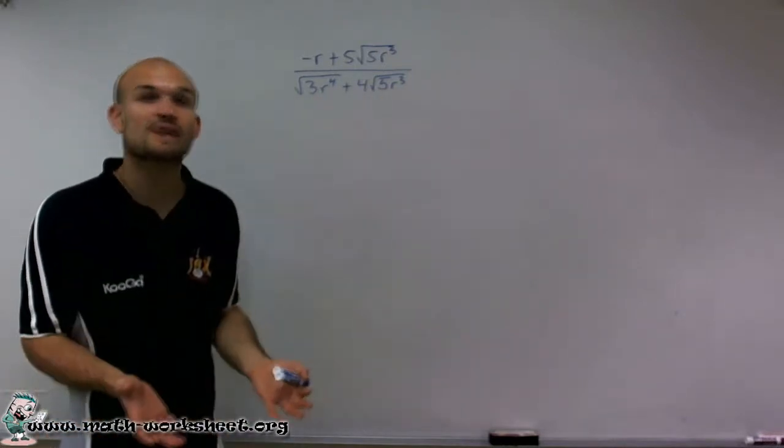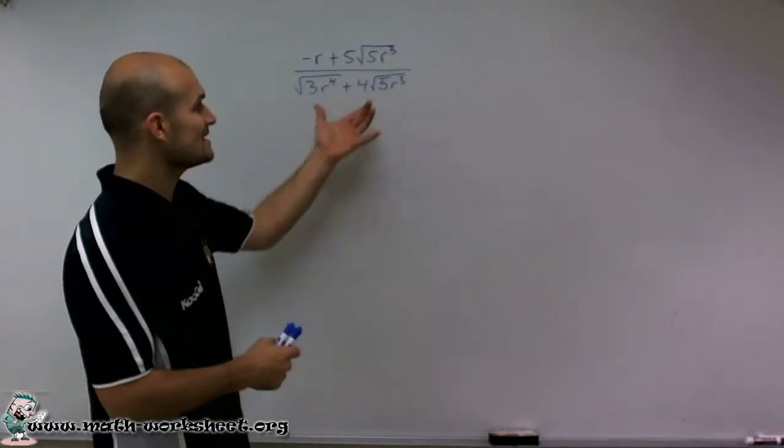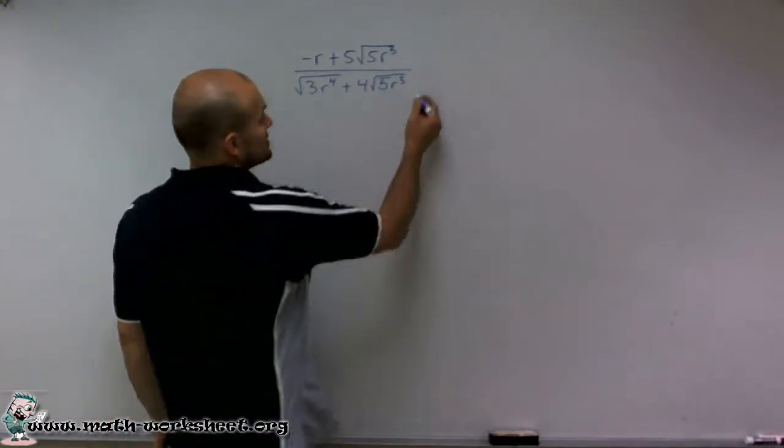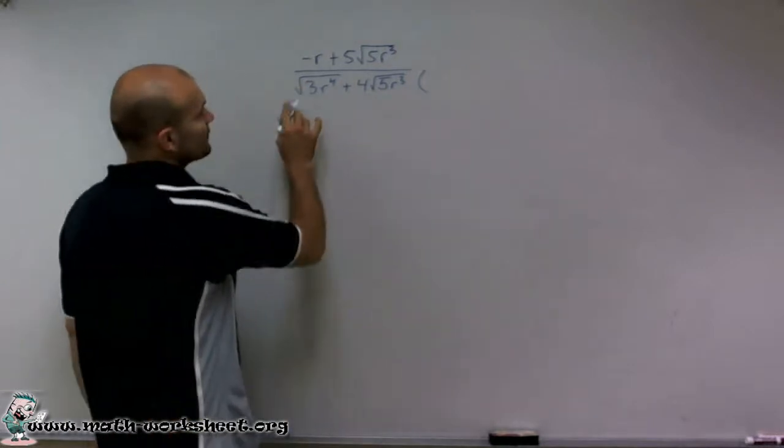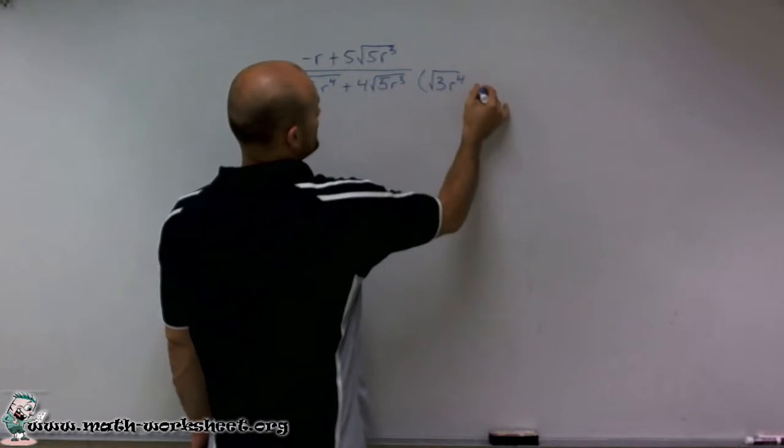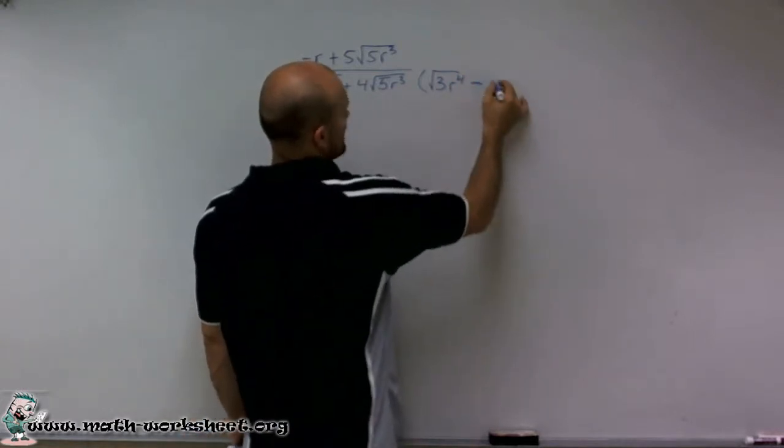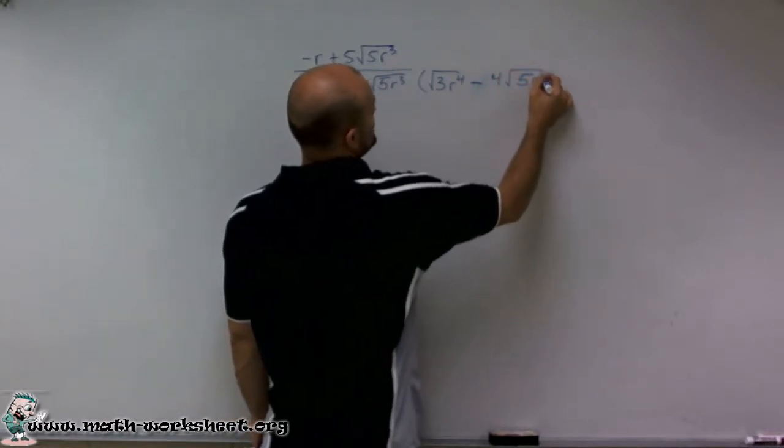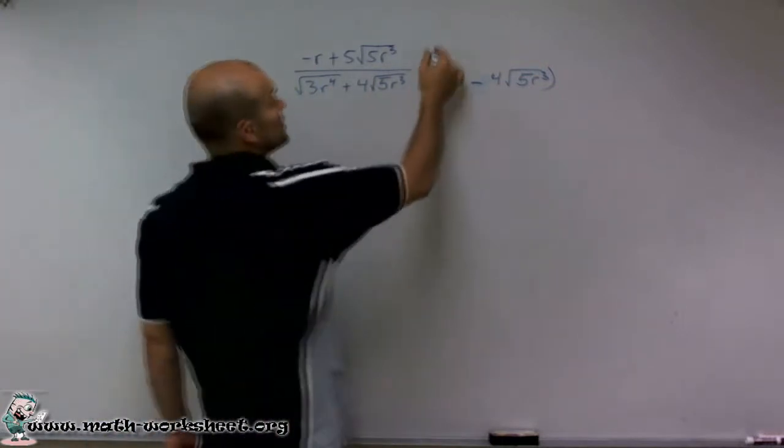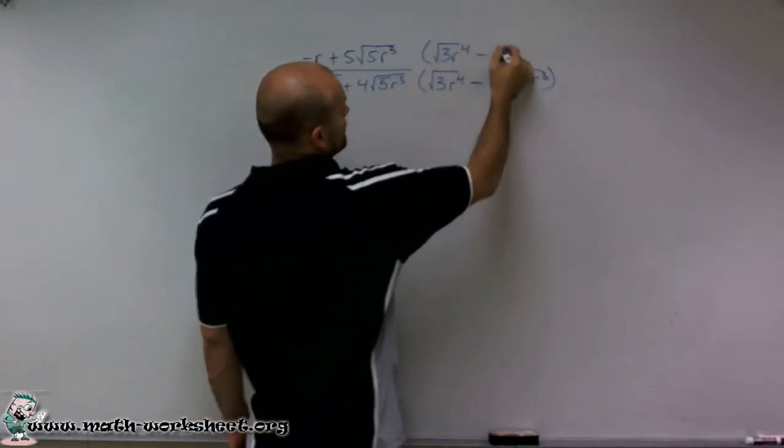So we look at this and we have a binomial. Since I can't combine these and I have them in a binomial, what I'm going to do is multiply by the conjugate. The conjugate of my denominator is the exact same expression, but rather than adding the two terms, I am now going to subtract them. And whatever I do on the denominator, I have to do to the numerator to make sure that I have equivalent fractions.